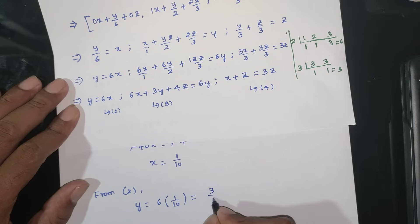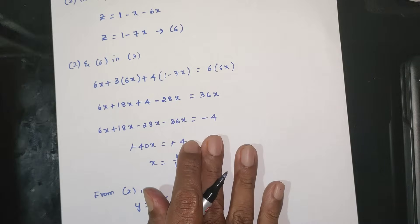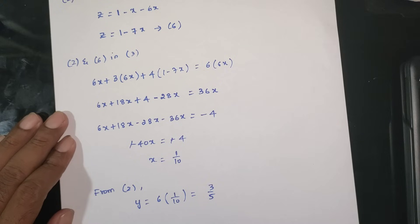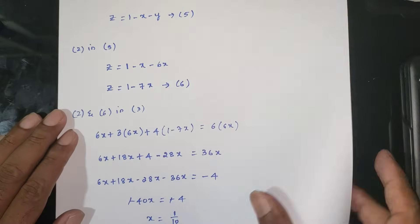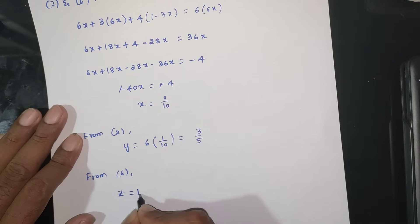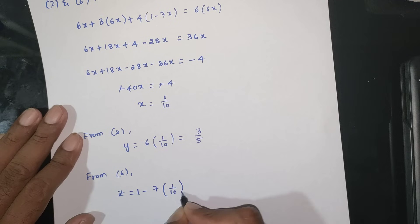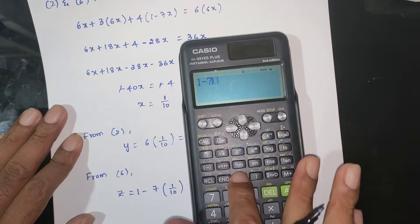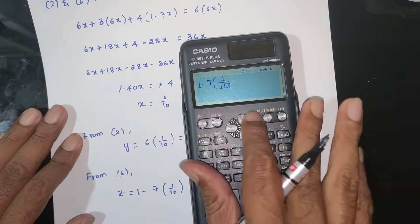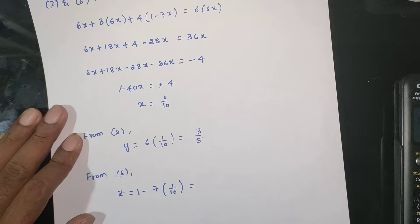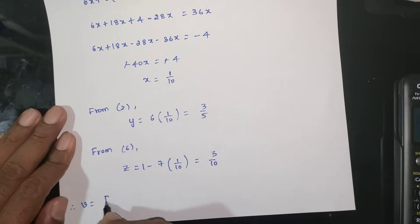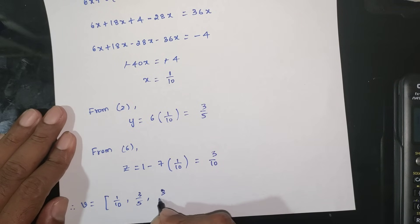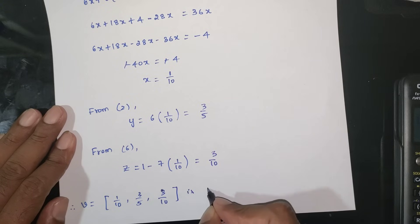The result is x equals 1/10. From equation 6, z equals 1 minus 7 times (1/10), giving z equals 3/10. Therefore, v equals [1/10, 3/5, 3/10], which is the unique fixed probability vector.